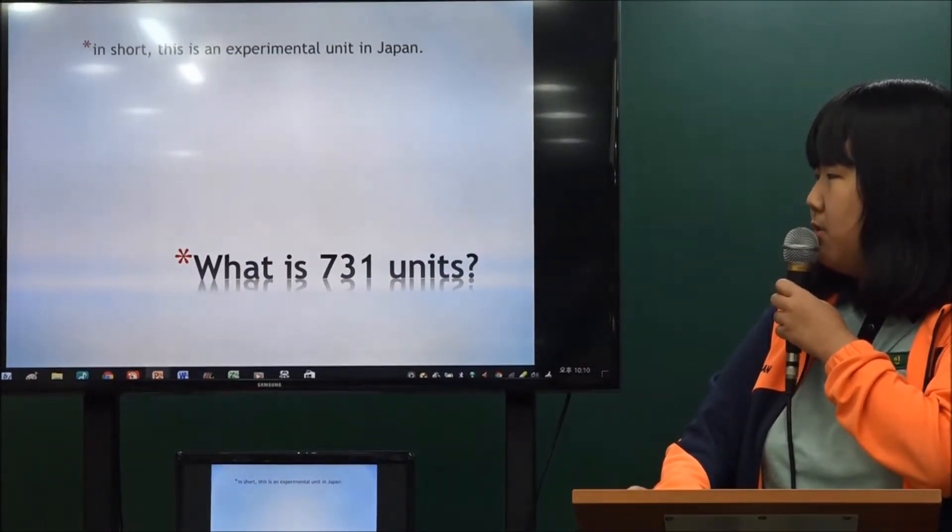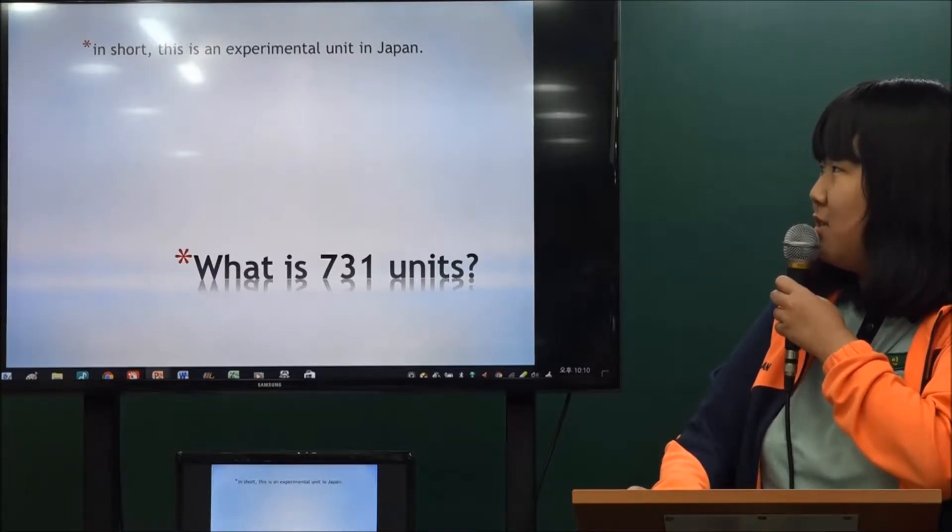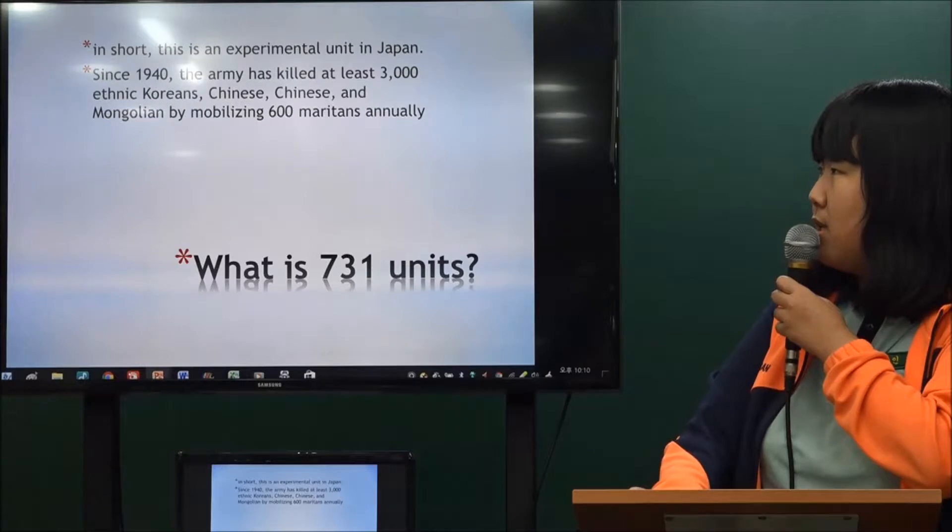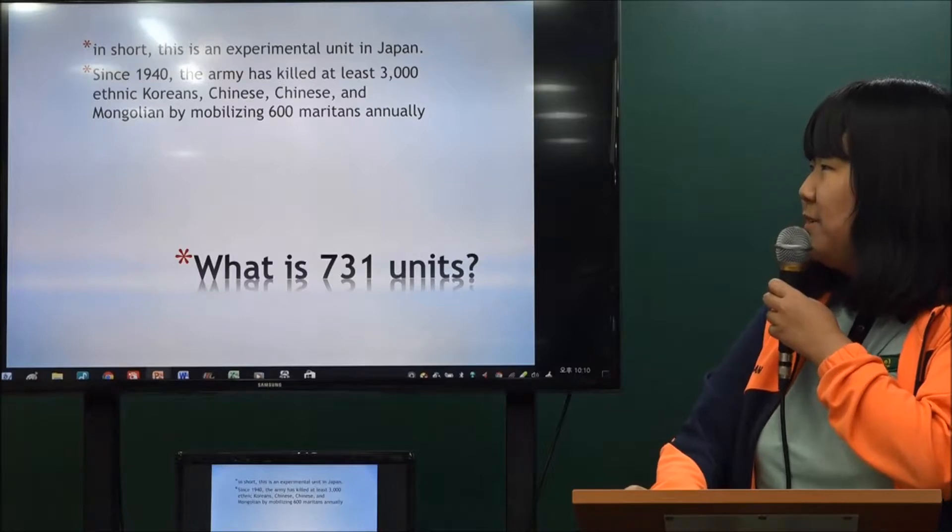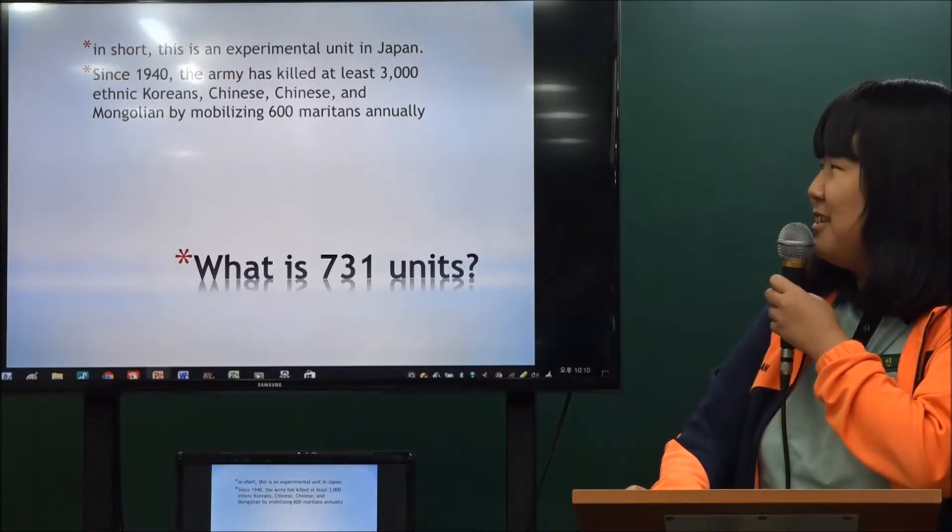What is Unit 731? In short, this is an experimental unit in Japan. Since 1940, the army has killed at least 3,000 people - Koreans, Chinese, Russians, and Mongolians - by mobilizing 300 more personnel annually.